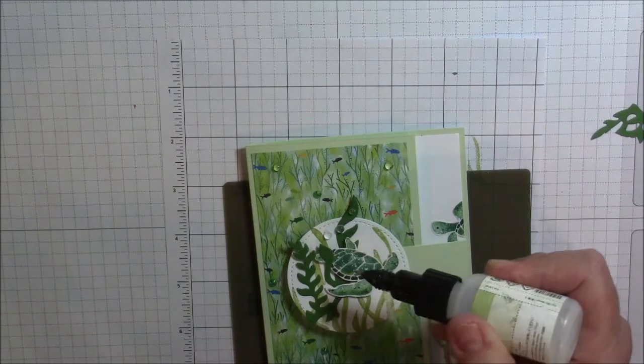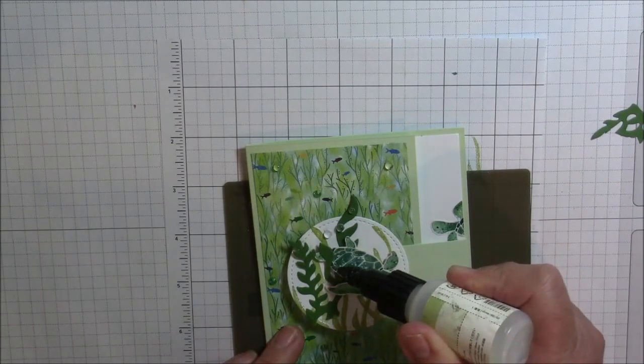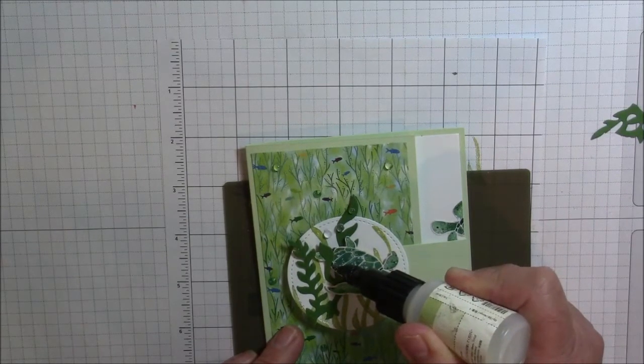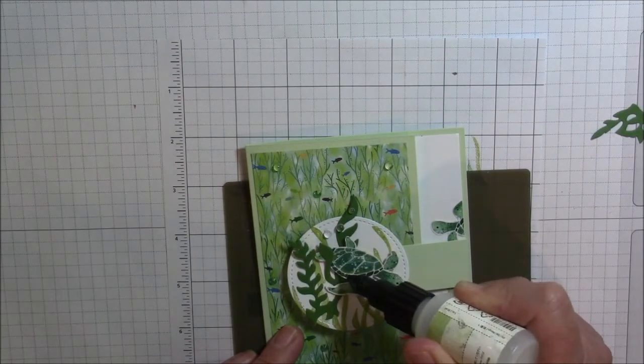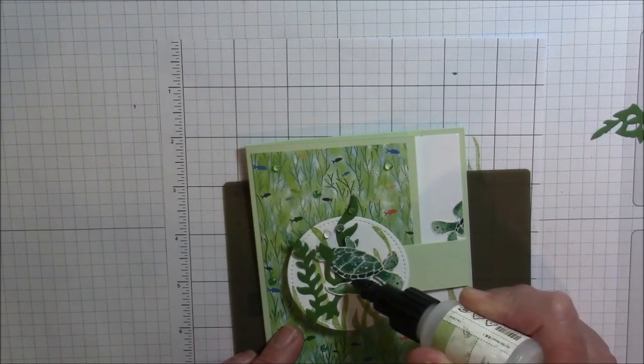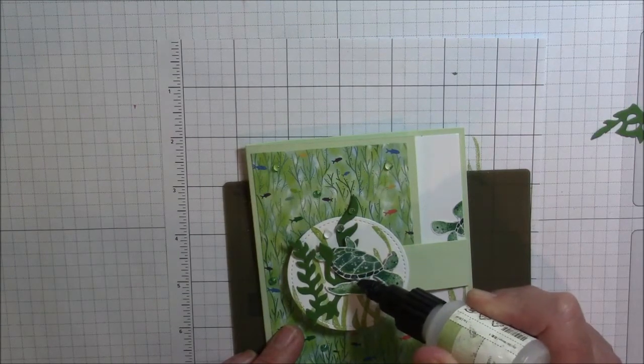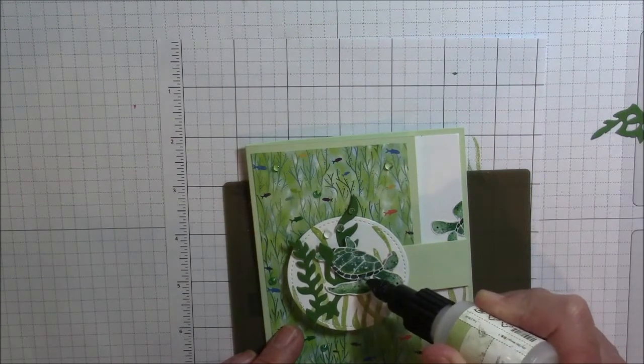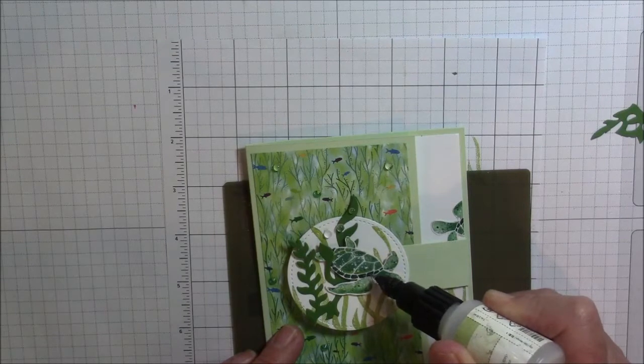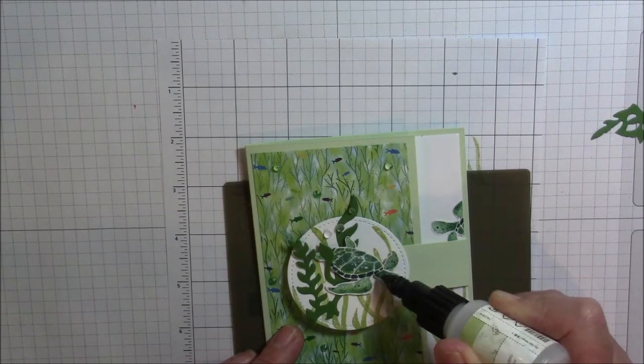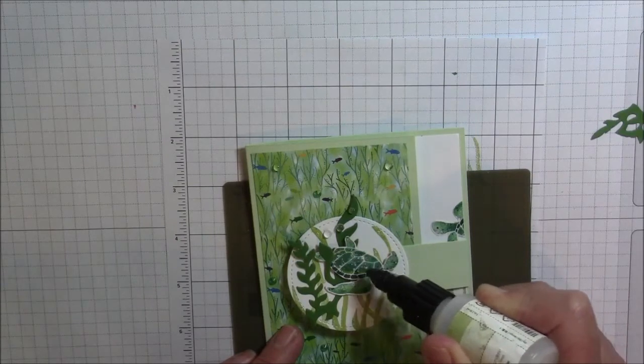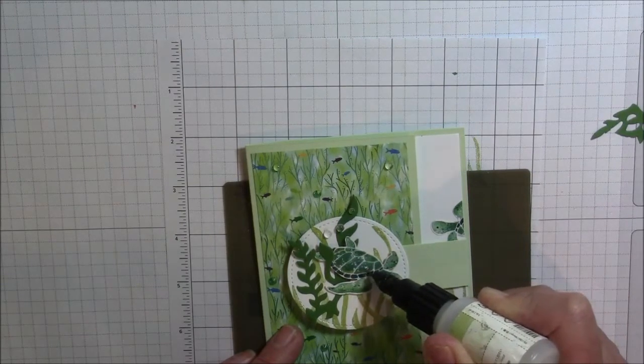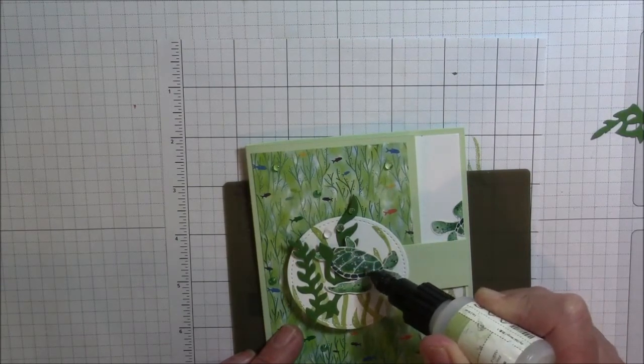I am going to take my fine tip glue pen and I am just going to dot a little bit of glue on his shell. I don't want to just cover the entire thing because I want it so that when you touch it you can feel the texture of the shell and it is going to be glimmering like it was under water.